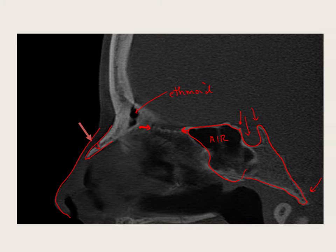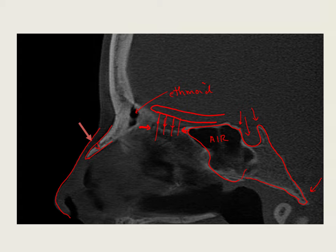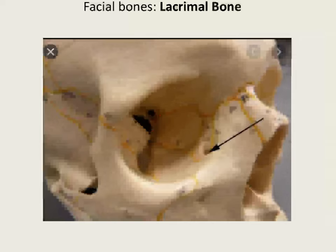You can also make out the cribriform plate between the arrows here, and you can kind of see those little gaps — those olfactory foramina — where the olfactory fibers drop down. You can really see the cool position of your brain: you have a nerve fiber called the olfactory bulb, and the fibers drop down. The upper part of your nasal cavity is where you actually sense smell.